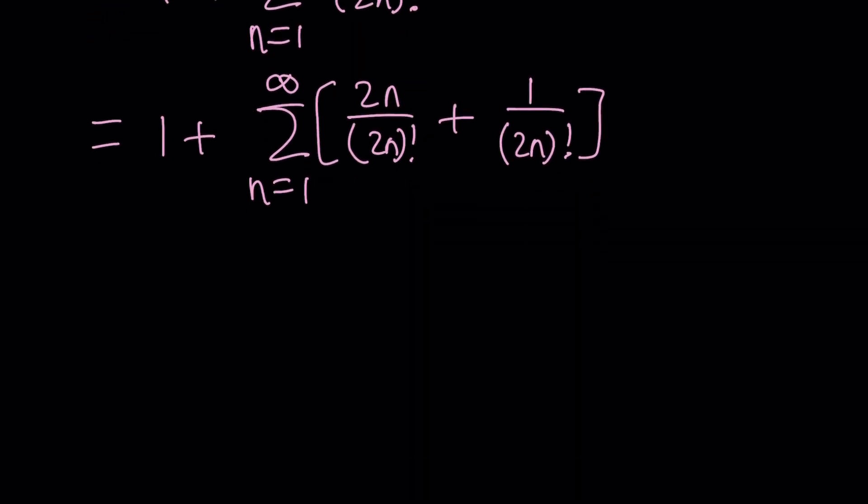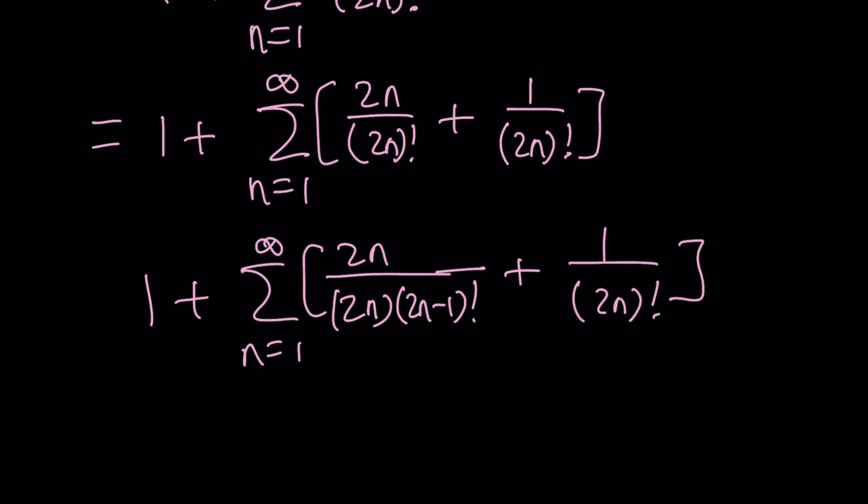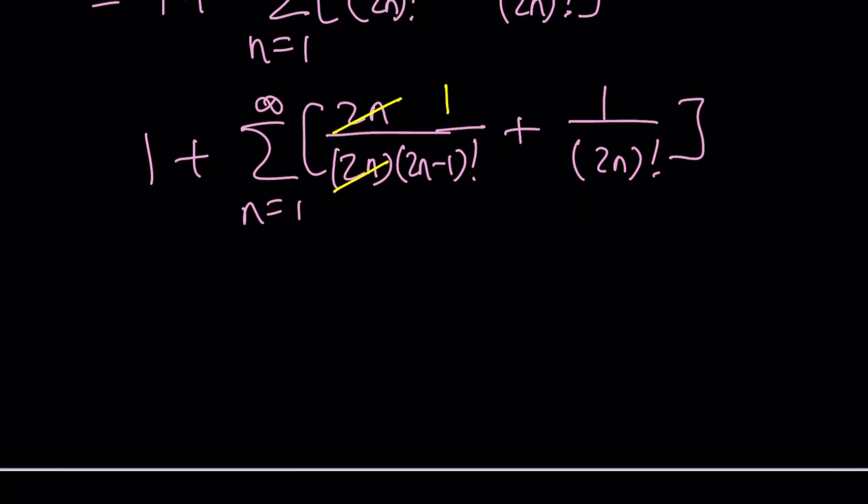But we're going to go ahead and simplify this a little bit. We're going to write the 2n factorial as 2n times 2n minus 1 factorial. So we're going to expand it once. And that way we can kind of make it a little better. Now notice that the 2n cancels out. We end up with 1. So now this becomes 1 plus 1 over 2n minus 1 factorial. So these are the odd factorials. One more time.